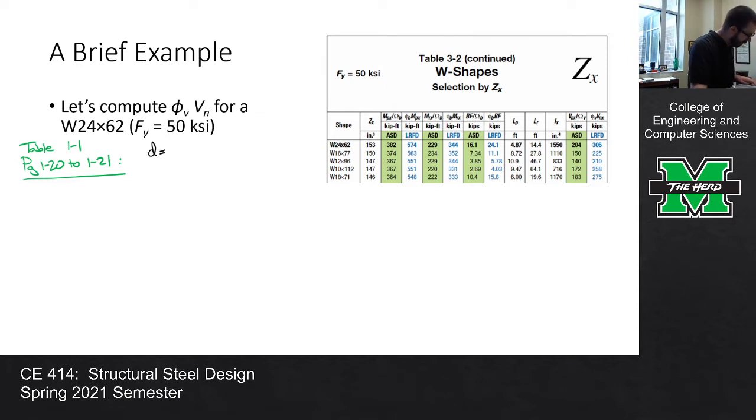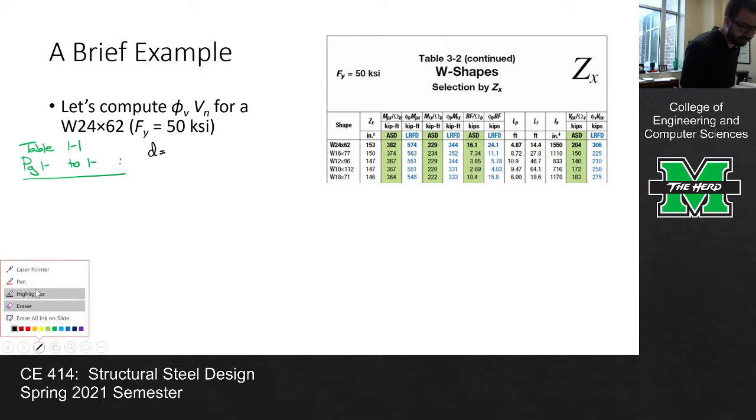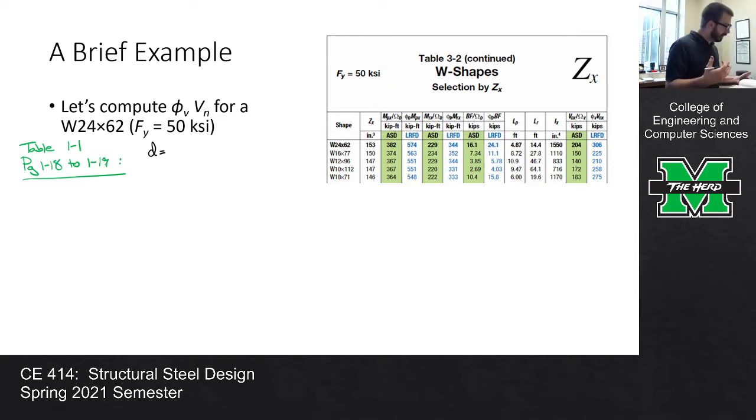Now I'm going in section 1.1 in the earlier part of the manual where all the W shape properties are. And we're going to look up for a W24 by 62. And so this is on page 1-20, 1-21, and that's in table 1-1. What we're going to do is we're going to look up a couple of properties and really what I need are three of them. I need the depth, which is for a W24 by 62. Let me see. The depth is, or sorry, no, W24 by 62. Sorry. So that page is wrong. No, it's 1-18 to 1-19. I thought something was wrong there. That's what it was. I was looking at a W21 by 62. Sorry about that. So this is 1-18 to 1-19. So the W24 by 62 has a depth of 23.7 inches. It has a web thickness of 0.43 inches.